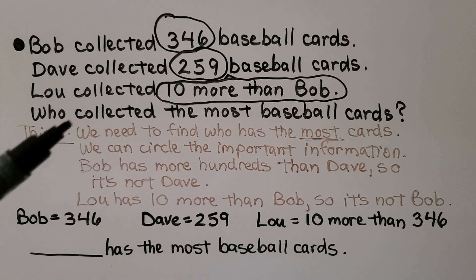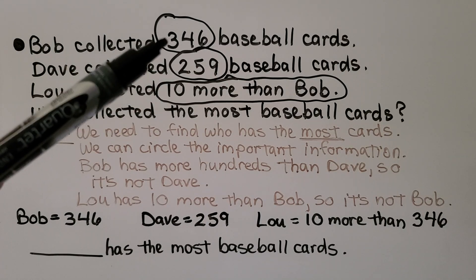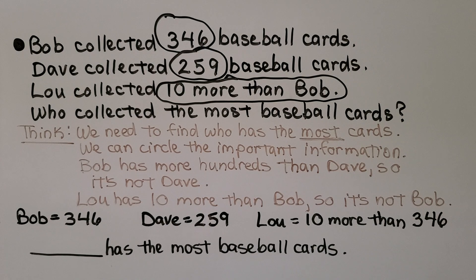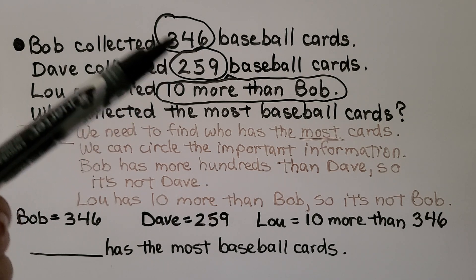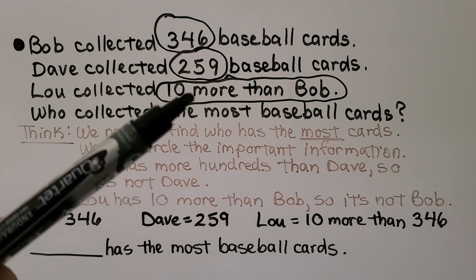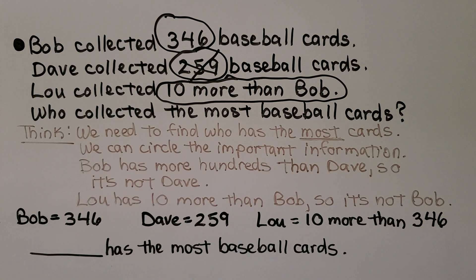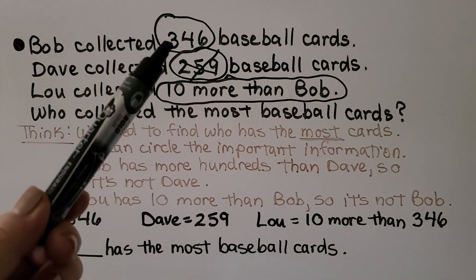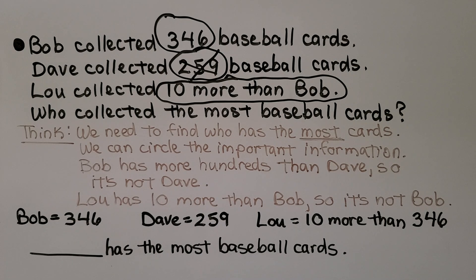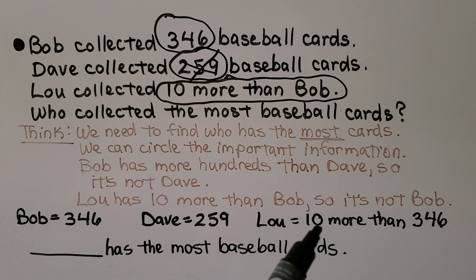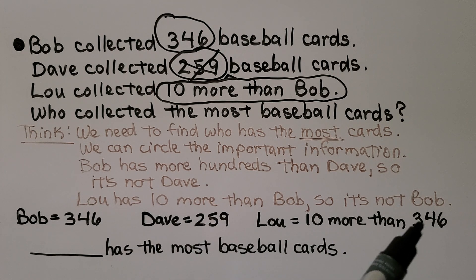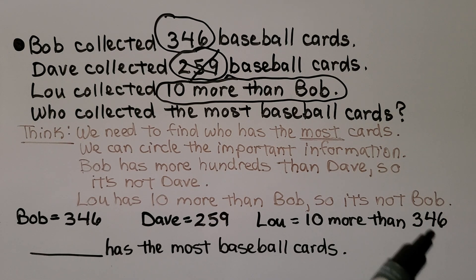Bob has more hundreds than Dave — 300 versus 200 — so it's not Dave. Bob already has more than Dave, and Lou has more than Bob, so we know it's not Dave. Lou has 10 more than Bob. Bob has 346, Dave has 259, Lou has 10 more than 346, which means Lou must have 356. So Lou has the most baseball cards.